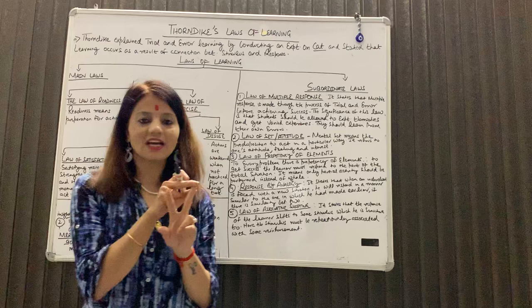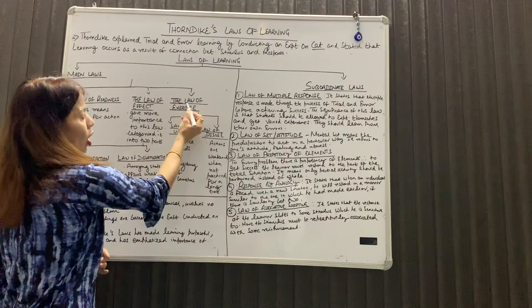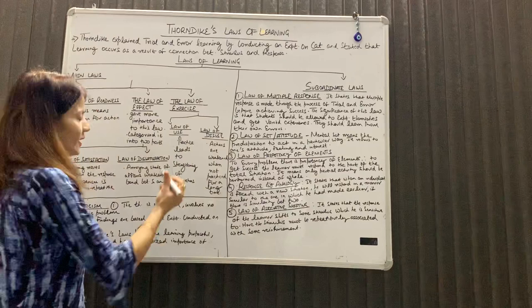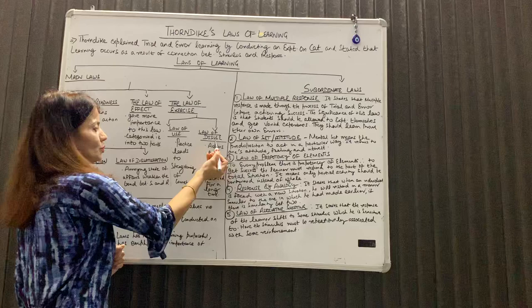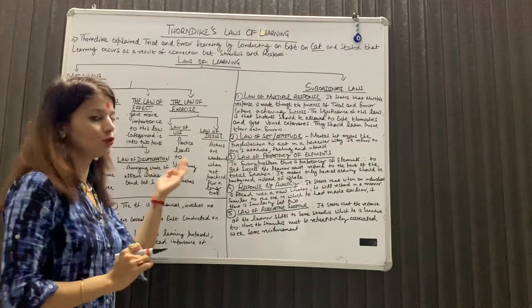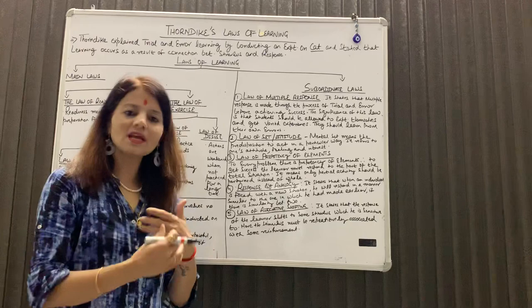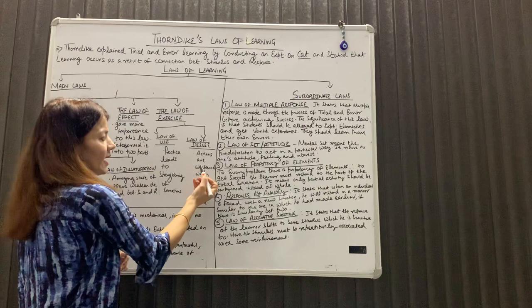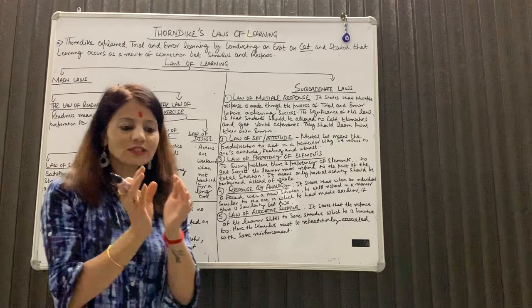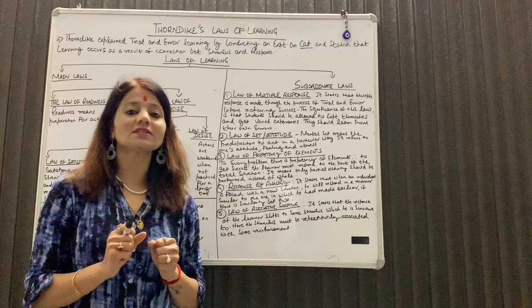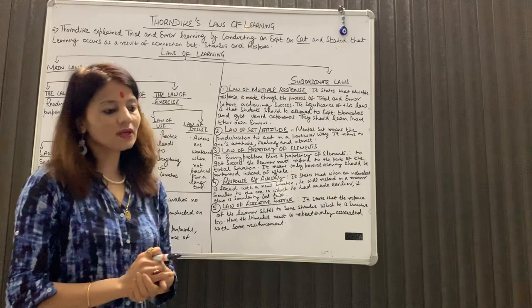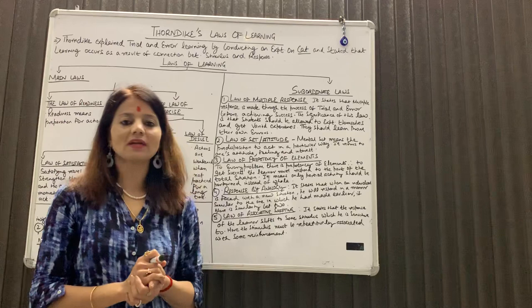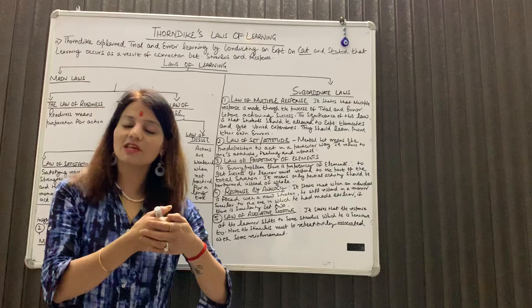अब Thorndike के तीसरे law में आती हूँ — वो है the law of exercise. Law of exercise को भी इन्होंने further दो category में divide किया था: पहला है law of use, दूसरा है law of disuse. जैसे practice makes a man perfect, law of use भी इसी पर based है — यदि आप किसी कार्य को बार-बार करते रहते हैं, तो S और R का bond और ज़्यादा strong होता है. Law of disuse कहता है actions are weakened when not practiced for a long time — हमारा S और R का bond weaker हो जाता है यदि हम उस कार्य की practice नहीं करते. जैसे maths में आप सums की जितनी ज़्यादा practice करेंगे, formulas की जितनी ज़्यादा practice करेंगे, आपकी उतनी अच्छी mastery होगी — वहीं अगर practice छोड़ देते हैं तो उस चीज़ को भूल जाएंगे.